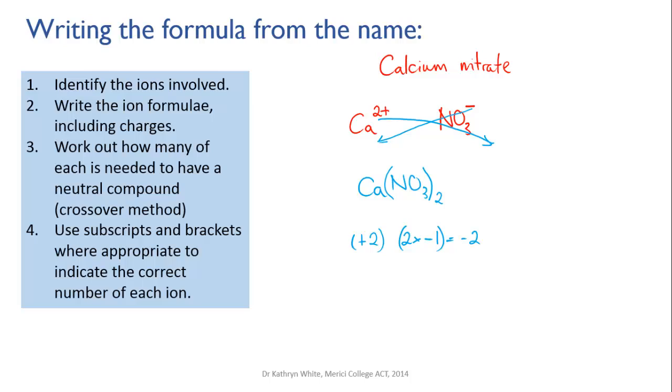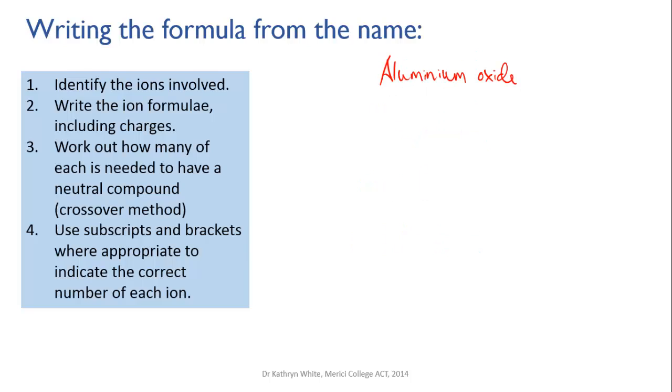One final example, aluminum oxide. Aluminum is one of our ions. It's in group three so it has a charge of plus three and oxygen is in group six. That means it has to gain two electrons to get a full outer shell which means that the oxide ion has a charge of minus two. If we do the crossover method we simply take the three down to the oxygen and the two down to the aluminum and that gives us a formula of Al2O3.